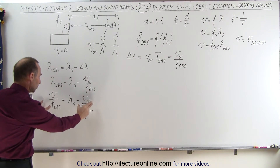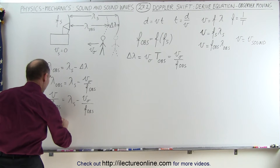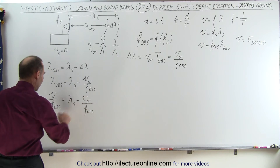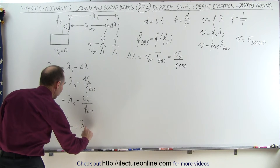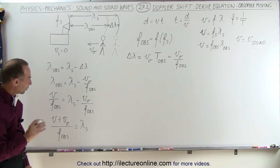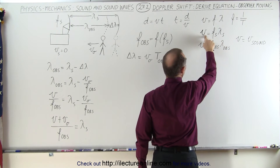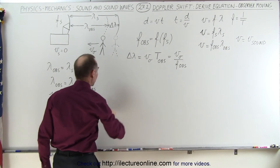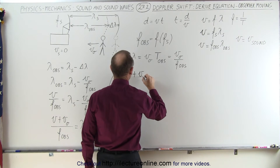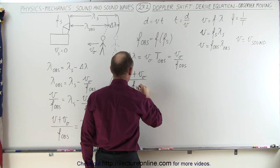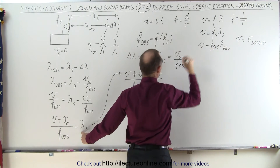Now we want to put both frequency terms on the same side of the equation. Moving the v_observer / f_observed term over, it becomes positive, giving us (v_sound + v_observer) / f_observed on the left side, equal to the wavelength of the source on the right. We then substitute λ_source = v_sound / f_source, so we have (v_sound + v_observer) / f_observed = v_sound / f_source.